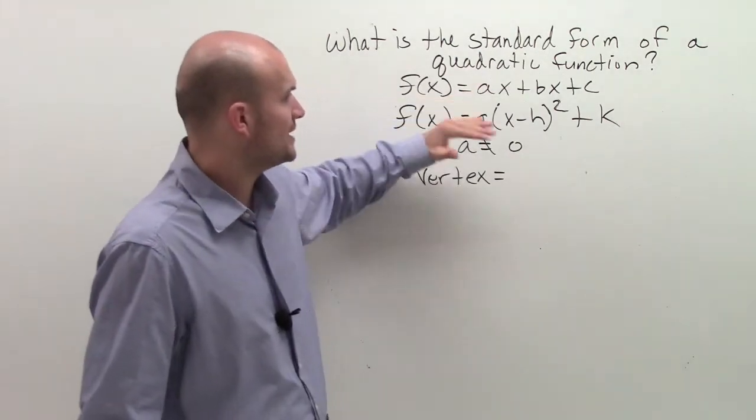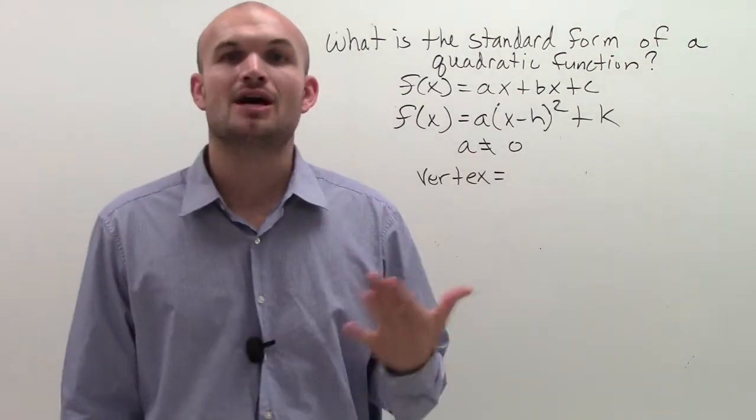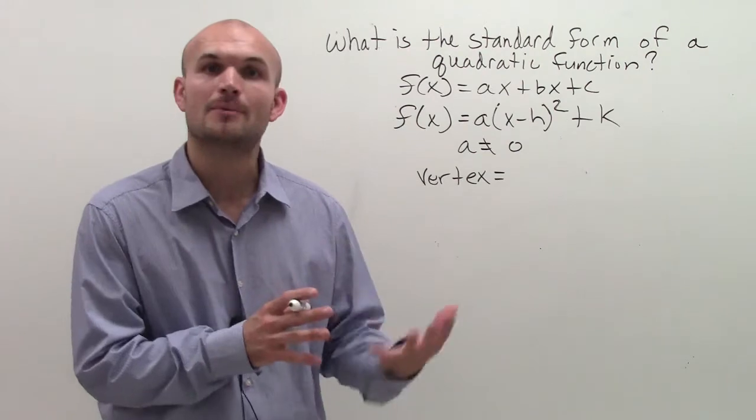But it's important if I go from here to here, or if I'm just given a quadratic in this form, it's important for us to understand that that's the standard form because it's going to tell us a couple of things about our parabola.